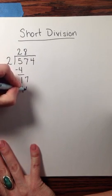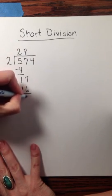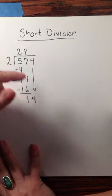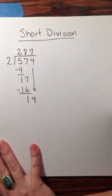8 times 2 being 16 with the remainder of 1, and then finally that 4 coming down and 2 fitting into 14 seven times.